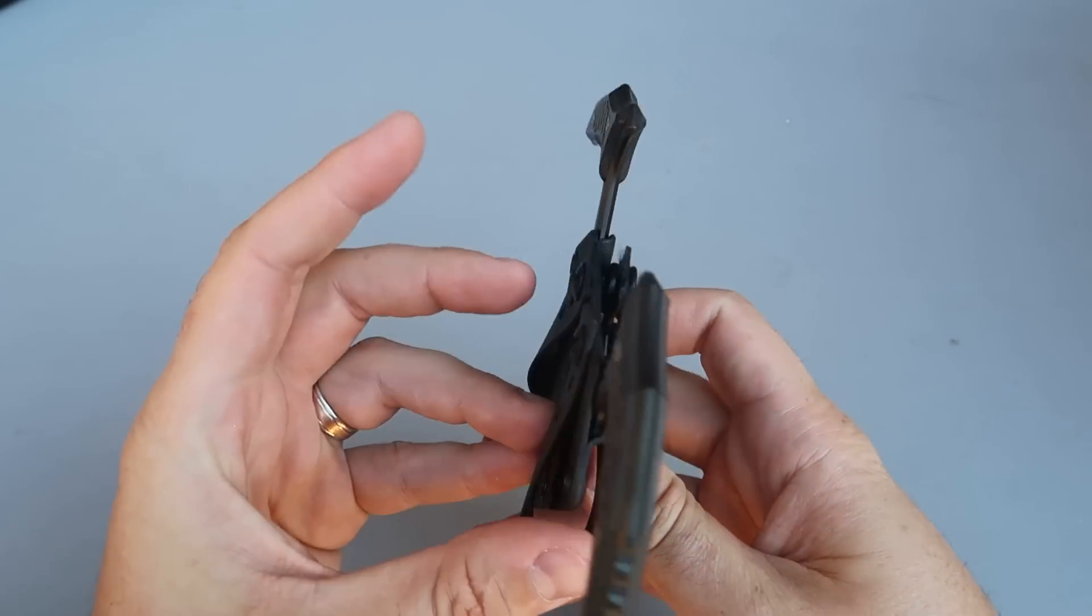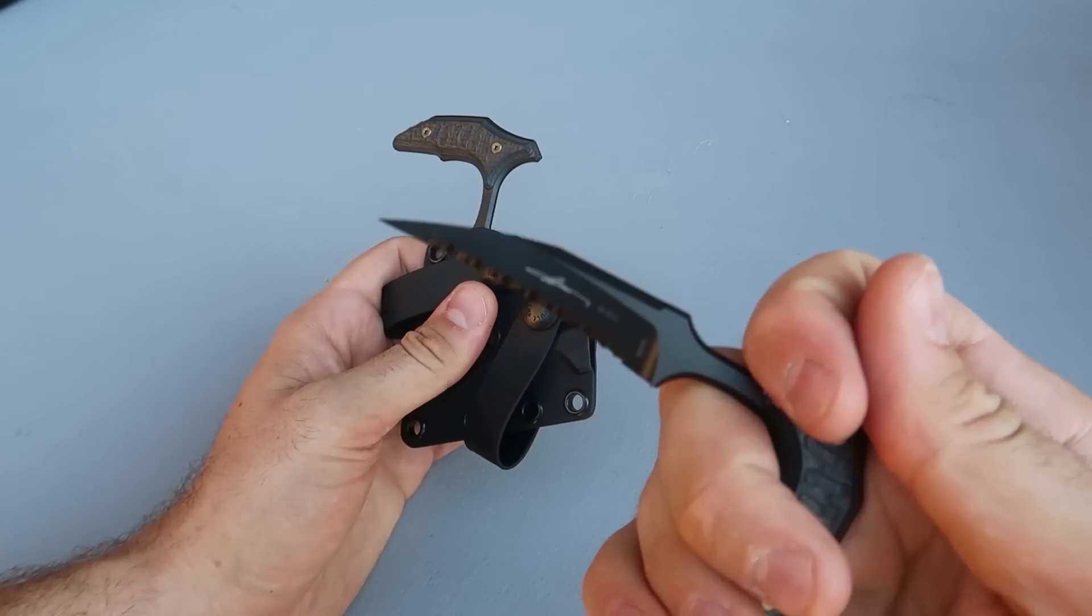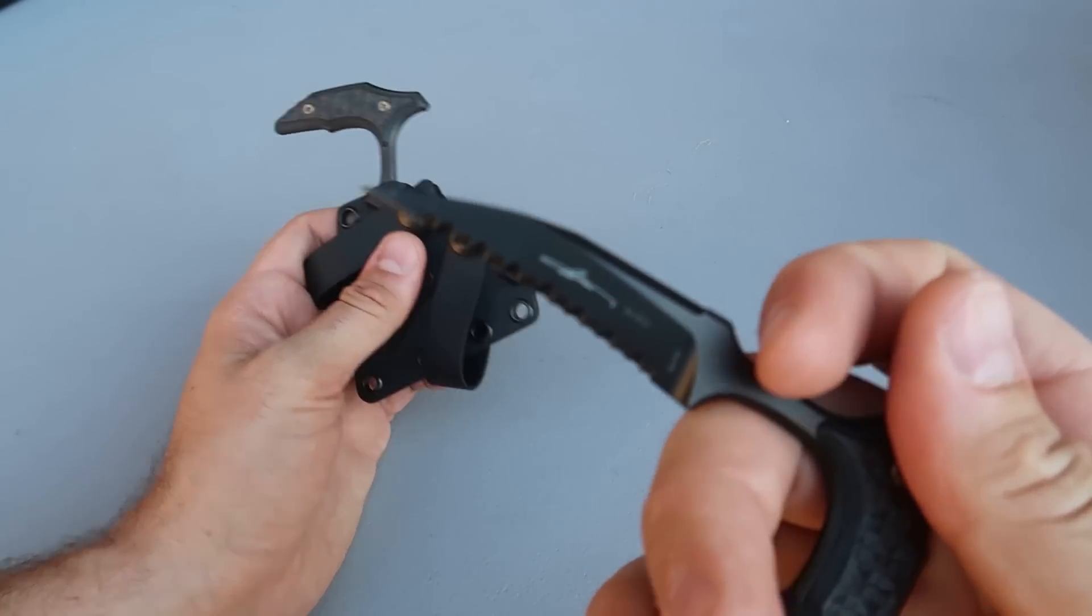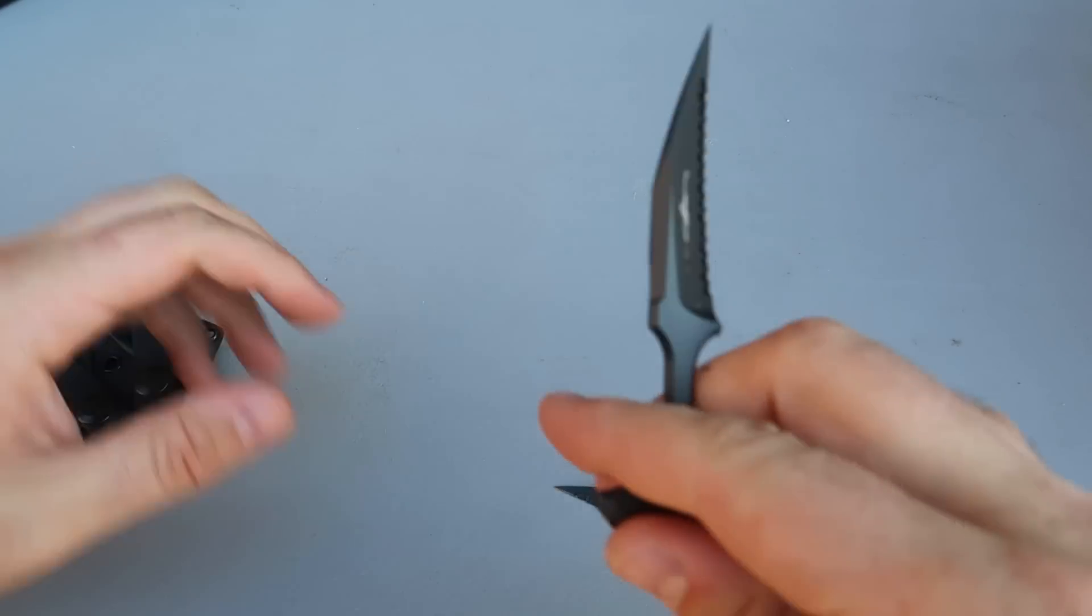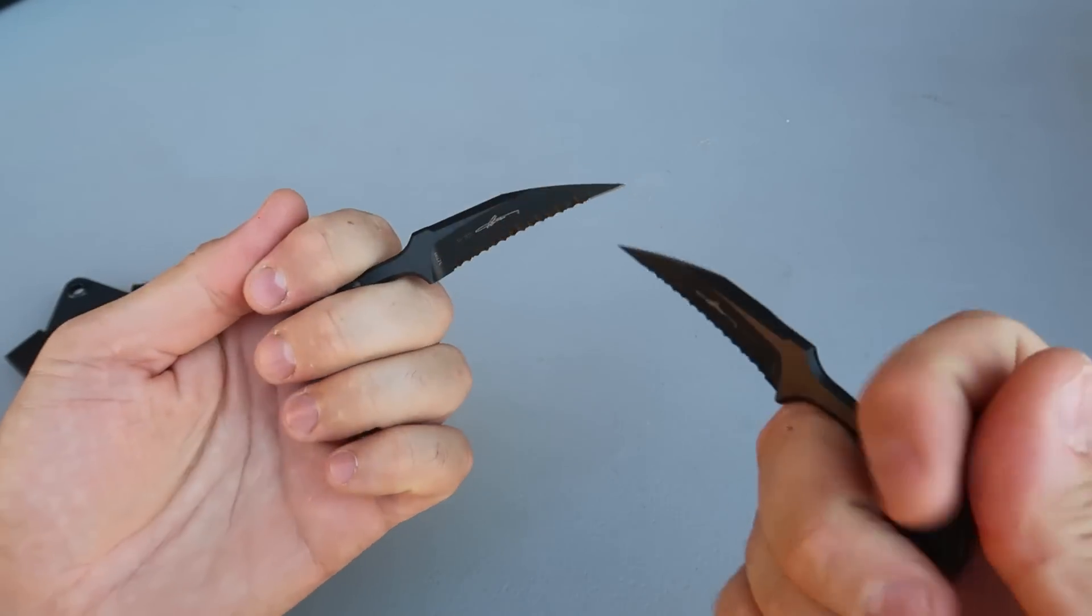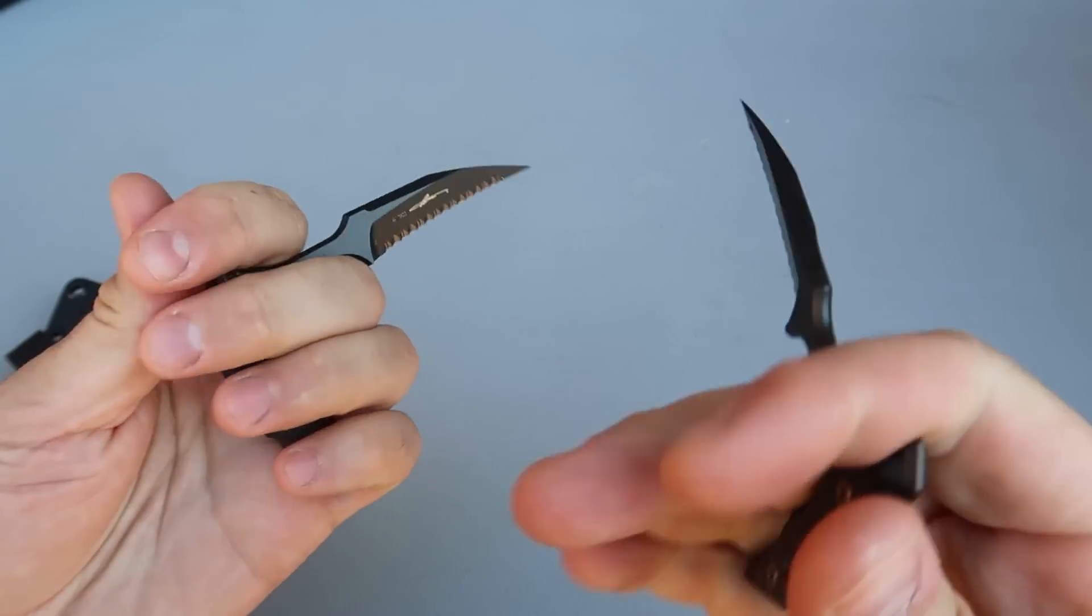This goes over your belt and you pull this one out. Check this out. This one is fully serrated and this one is also fully serrated signature series. Pretty cool, isn't it?